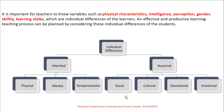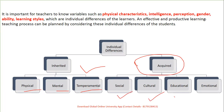Individual difference is an important topic — a question has appeared on it. Individual difference is based on what is inherited in the form of physical, mental, and temperamental characteristics, and what can be acquired socially, culturally, emotionally, or with the help of education.